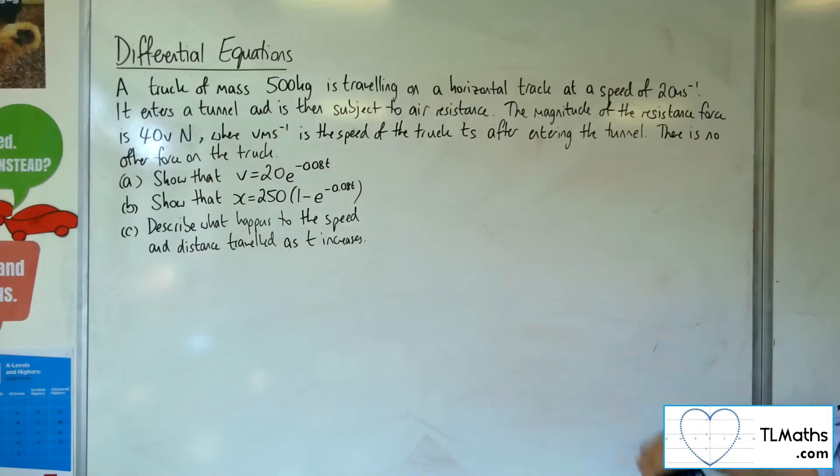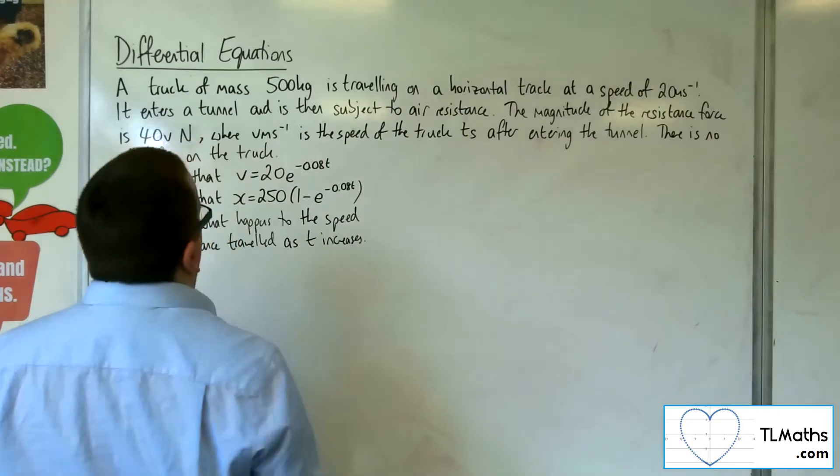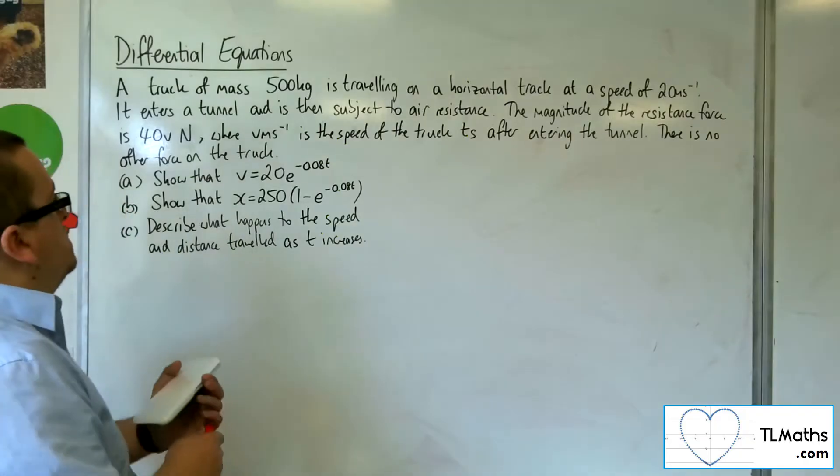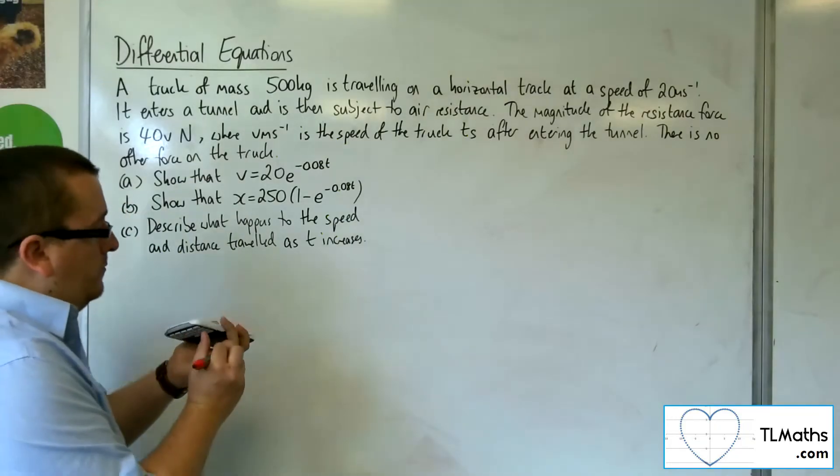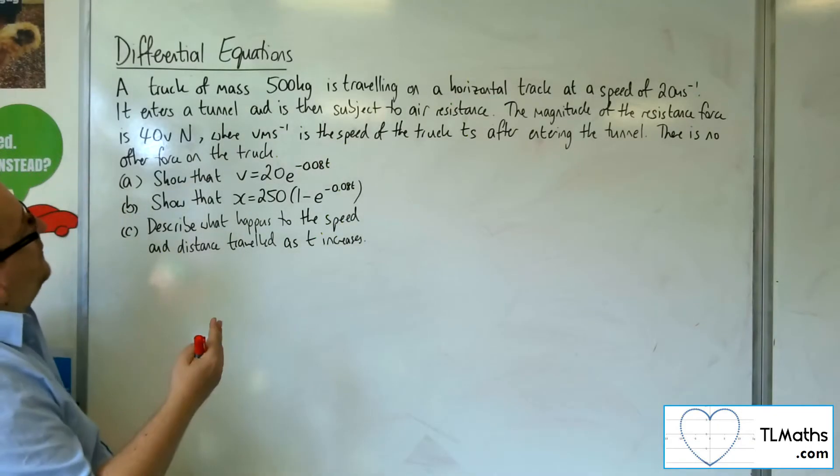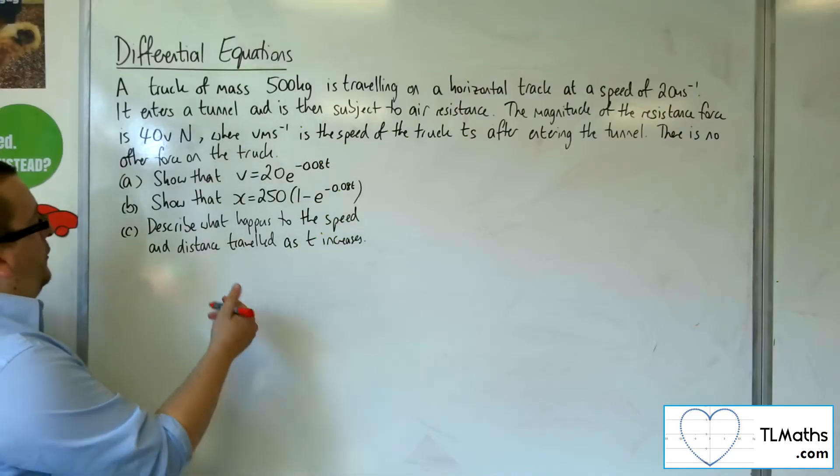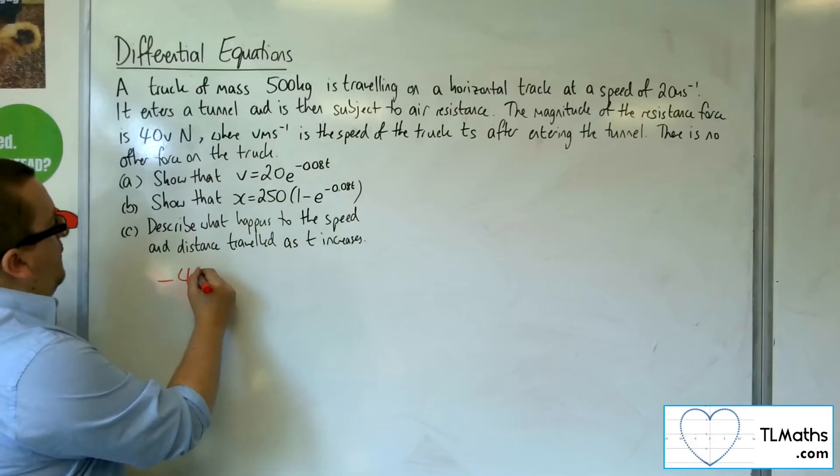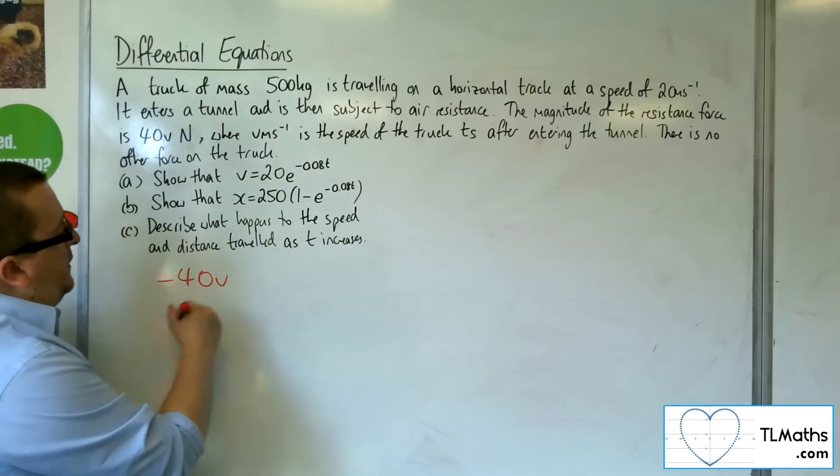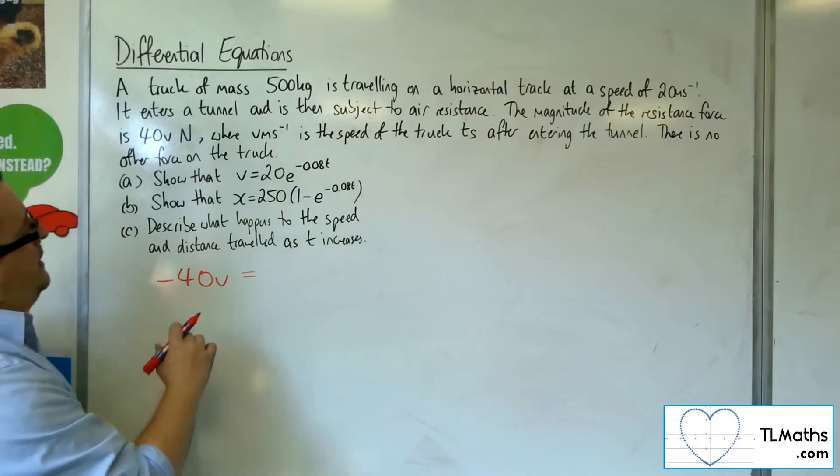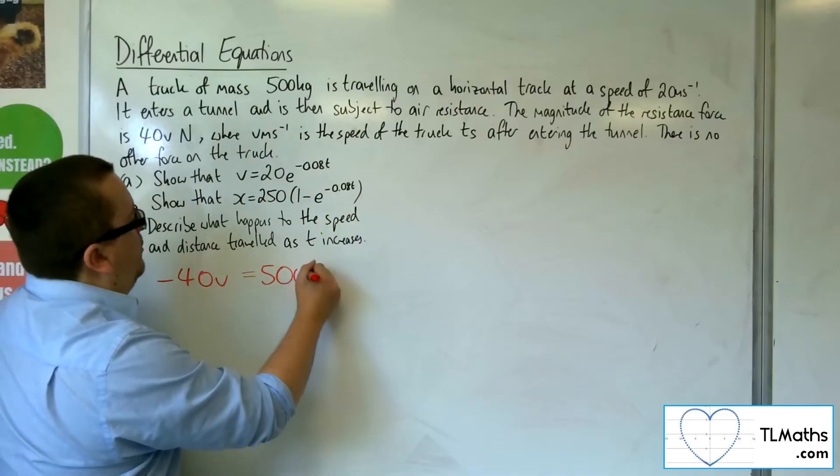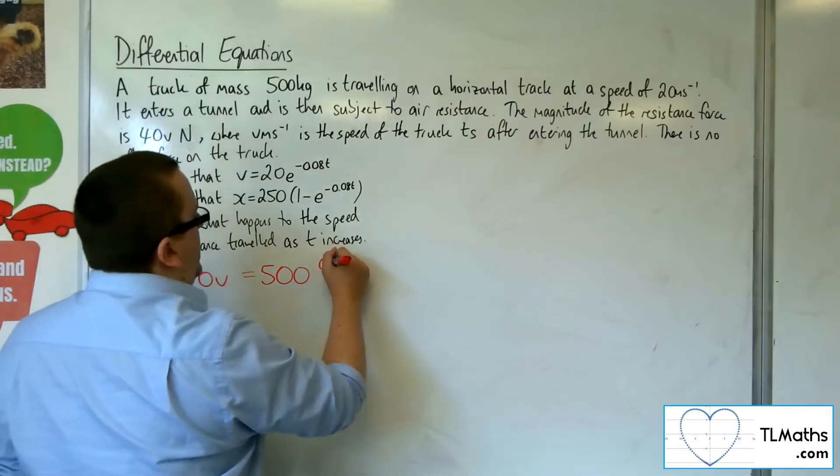First bit, show that V equals 20e to the minus 0.08T. So we've got the only force affecting the truck is that 40V newtons working against us. The net force is minus 40V, and that's got to be equal to the mass 500 times by the acceleration, which is dV by dT.